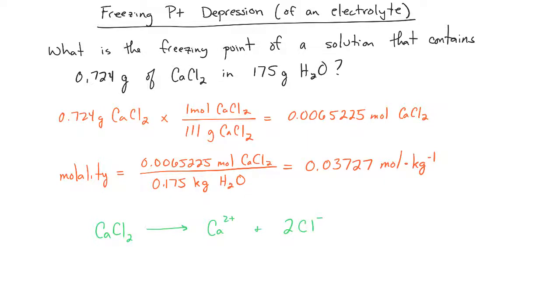If you have a 0.037 molal solution of calcium chloride, you're going to get 0.03727 molal calcium. But you're going to get double that of the chloride ion because there will be twice as many chlorides as there are calcium ions.